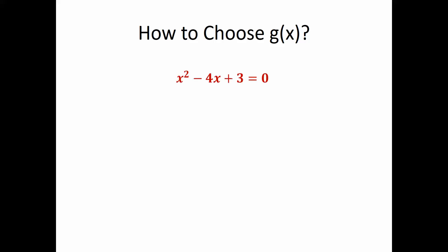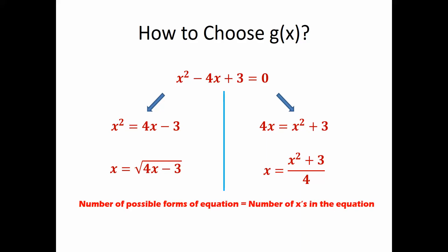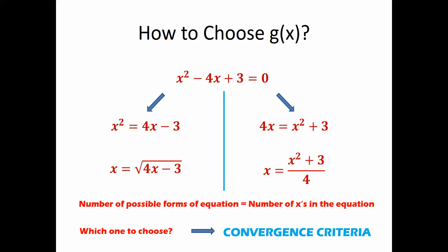There are two important questions. The first is: how do you choose g(x)? You may have an equation with x appearing multiple times — which x do you isolate on the left-hand side? The equation can be written in different forms. The number of possible forms equals the number of x's in the equation. The choice depends on what we call the convergence criteria.